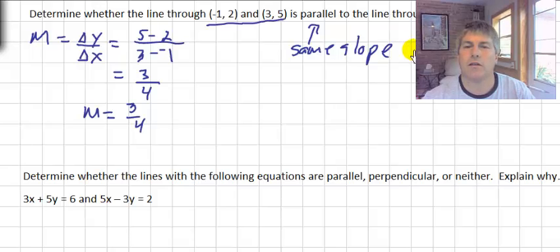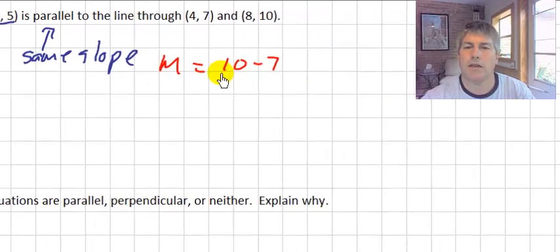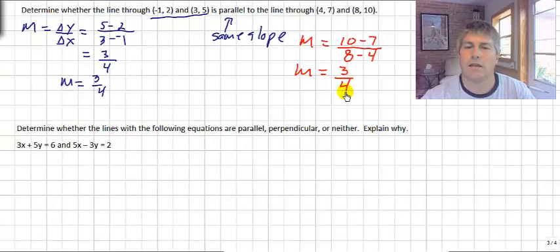Same process. I'm going to calculate my slope. 10 minus 7. Change in y-coordinates. Since I started with this y-coordinate, I've got to start with the x-coordinate of the same ordered pair. So 8 minus 4. So our slope, again, is 3-fourths. So yes, we do have parallel lines.